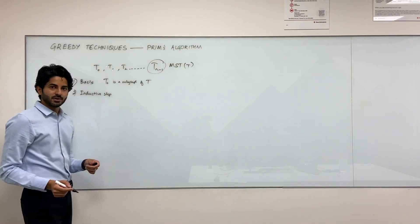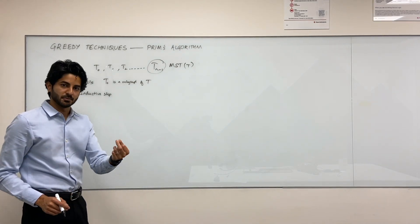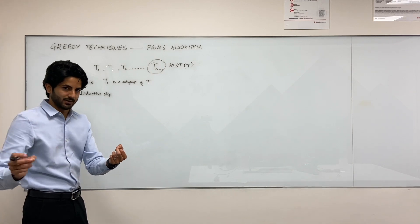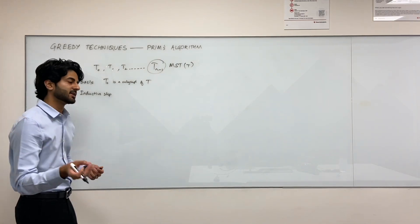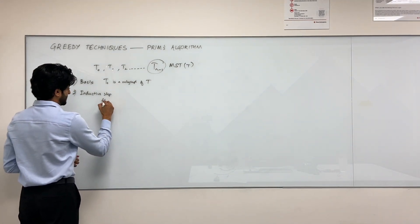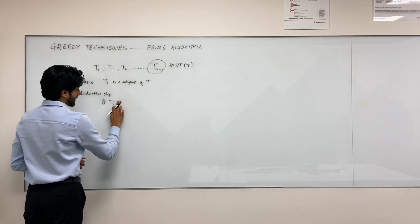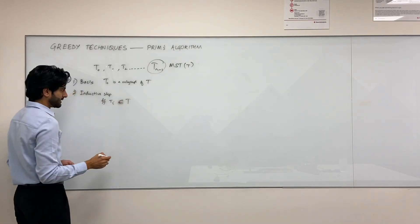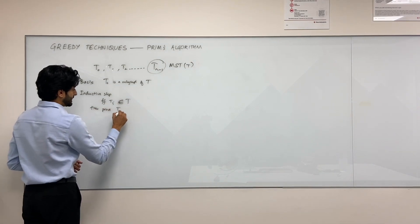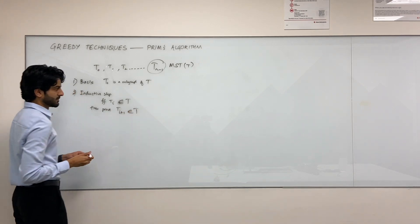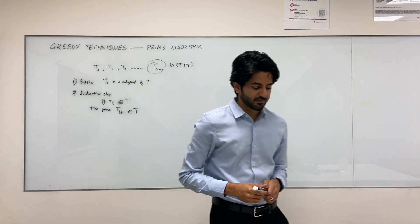For the inductive step: you assume that a given i-th step produces a subgraph of the minimum spanning tree, and then you prove that ti+1, after applying Prim's, also generates a subgraph of the minimum spanning tree. So if ti is a subgraph of the minimum spanning tree, then prove that ti+1 is also a subgraph of the minimum spanning tree. That's what we are trying to prove.